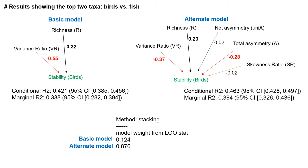The results from the model comparisons in BAD show that stability is better predicted by the alternate model, as the R-squared values are much better than those from the basic model. Richness has a significant positive effect on stability, variance ratio has a significant negative effect on stability, and total asymmetry A has a significant negative effect on stability for birds. The LOO statistics also show that the alternate model has better weightage than the basic model. We obtained similar results for fish as for birds.